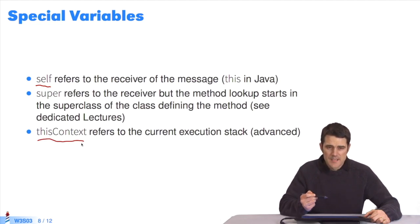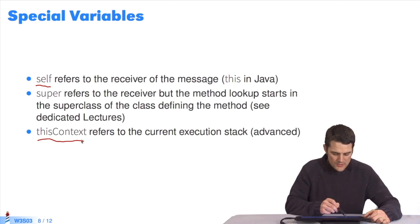ThisContext is a pseudo variable which refers to the object that reifies the program's call stack. It's an advanced concept we'll study at the end of this MOOC. We will explain it to you later. For now, you just need to know it's a pseudo variable.